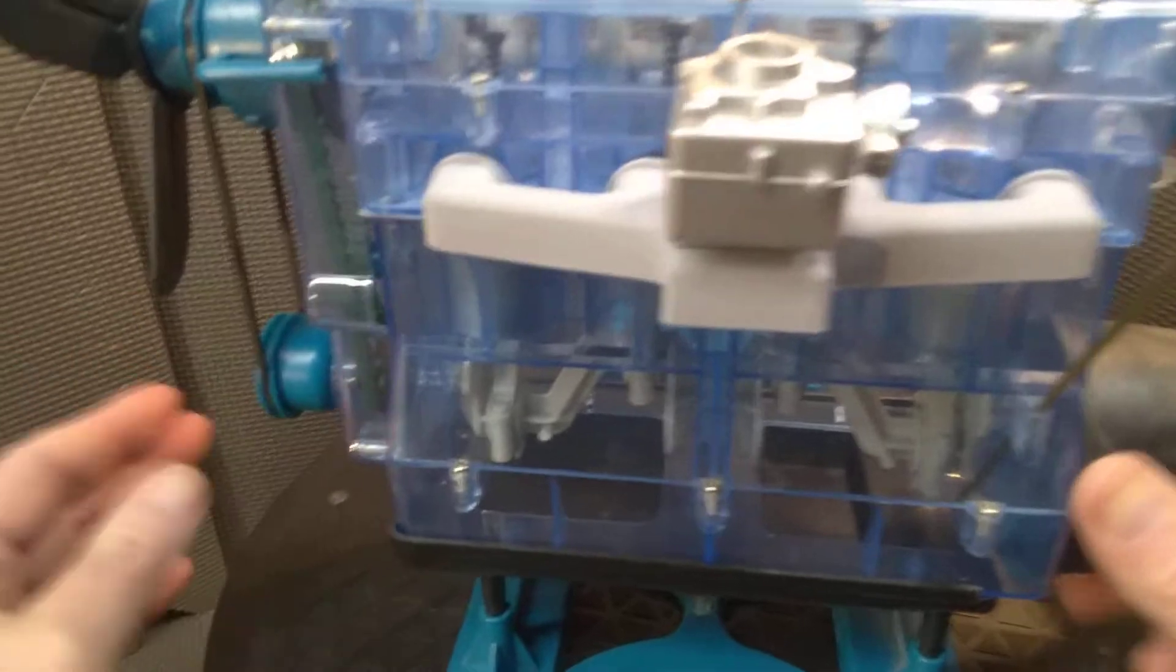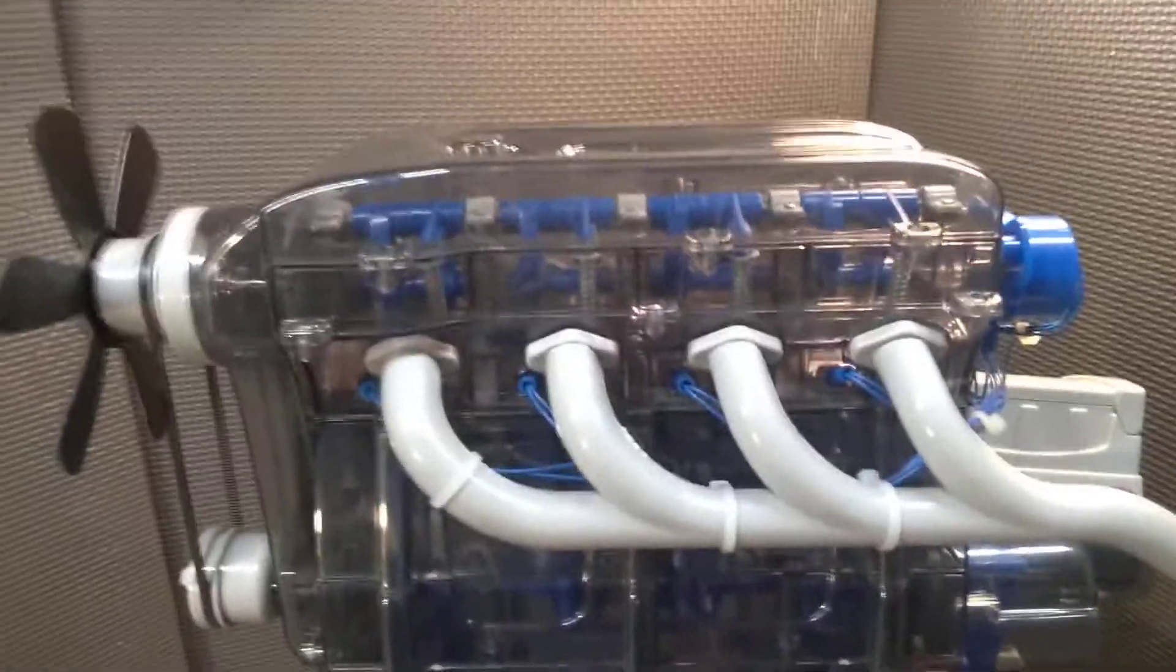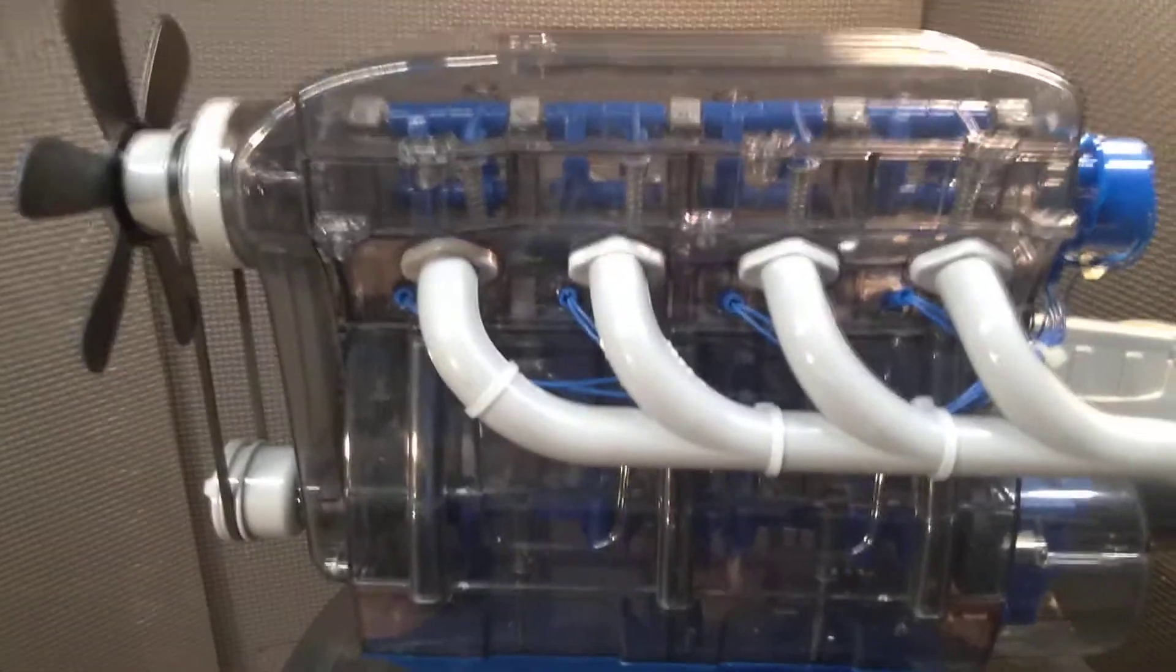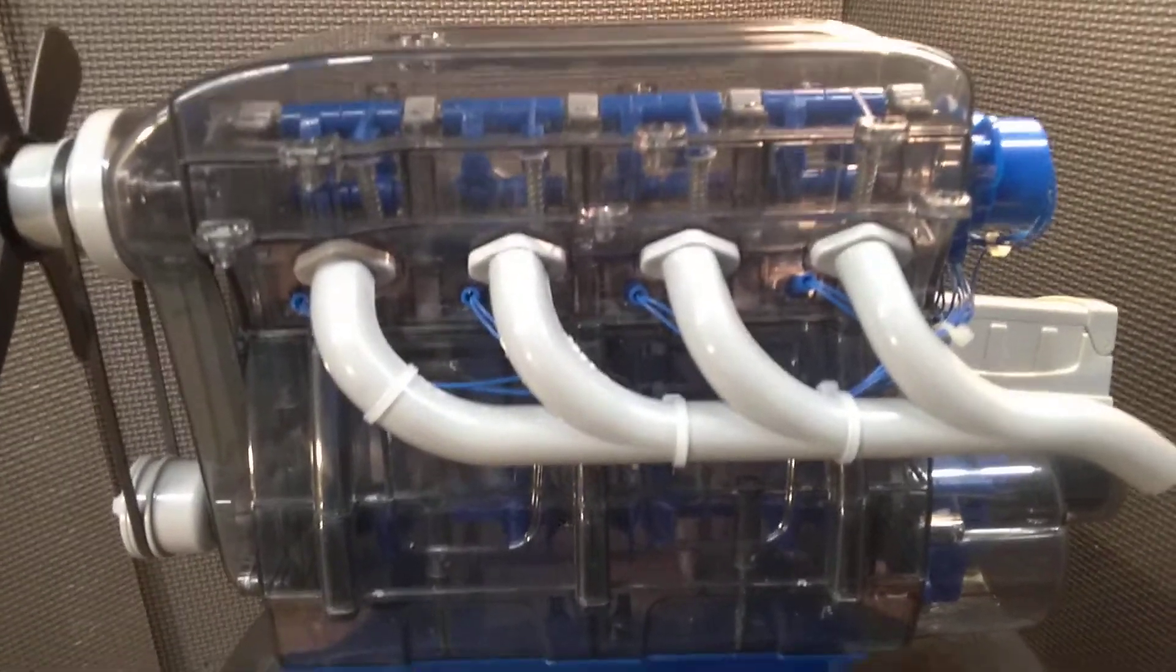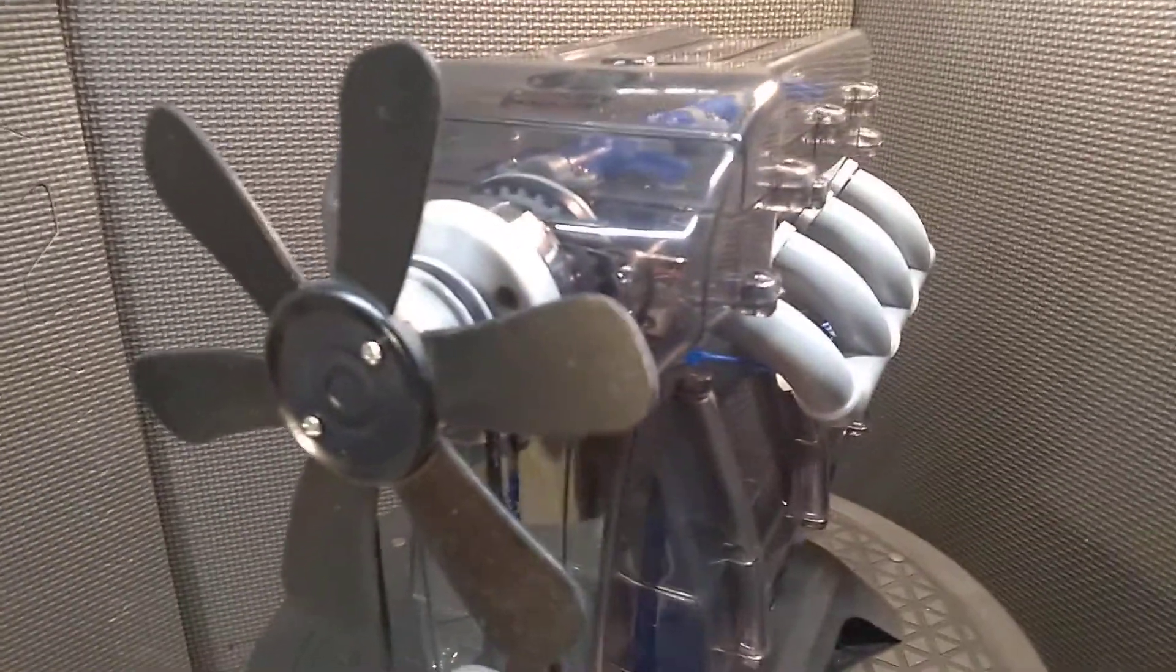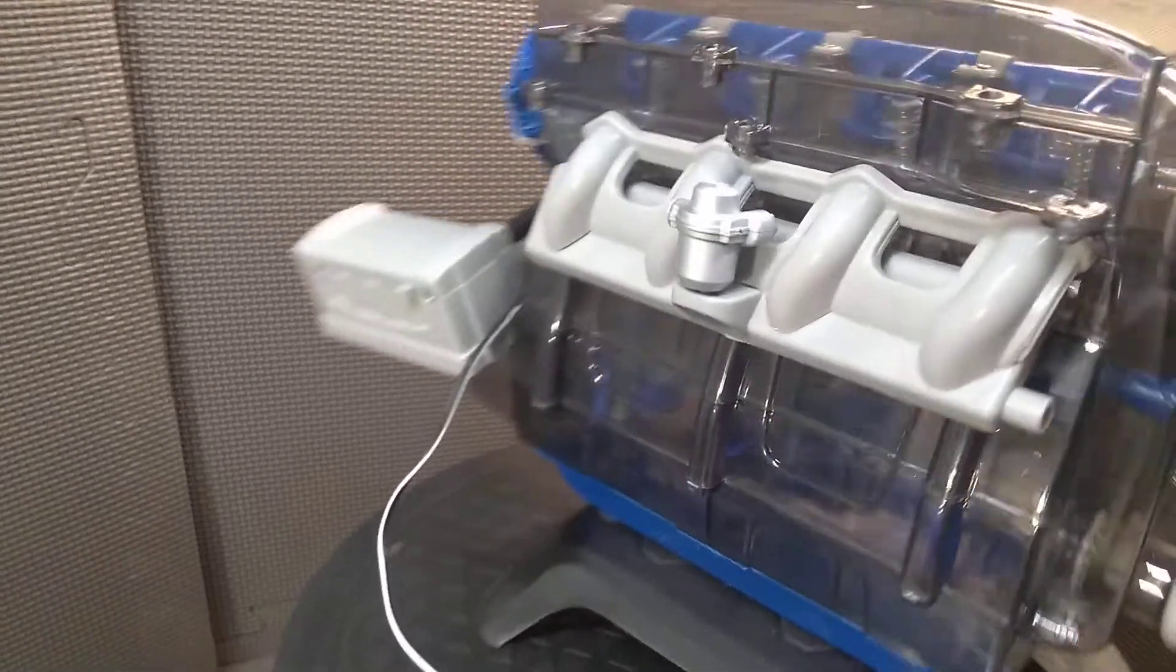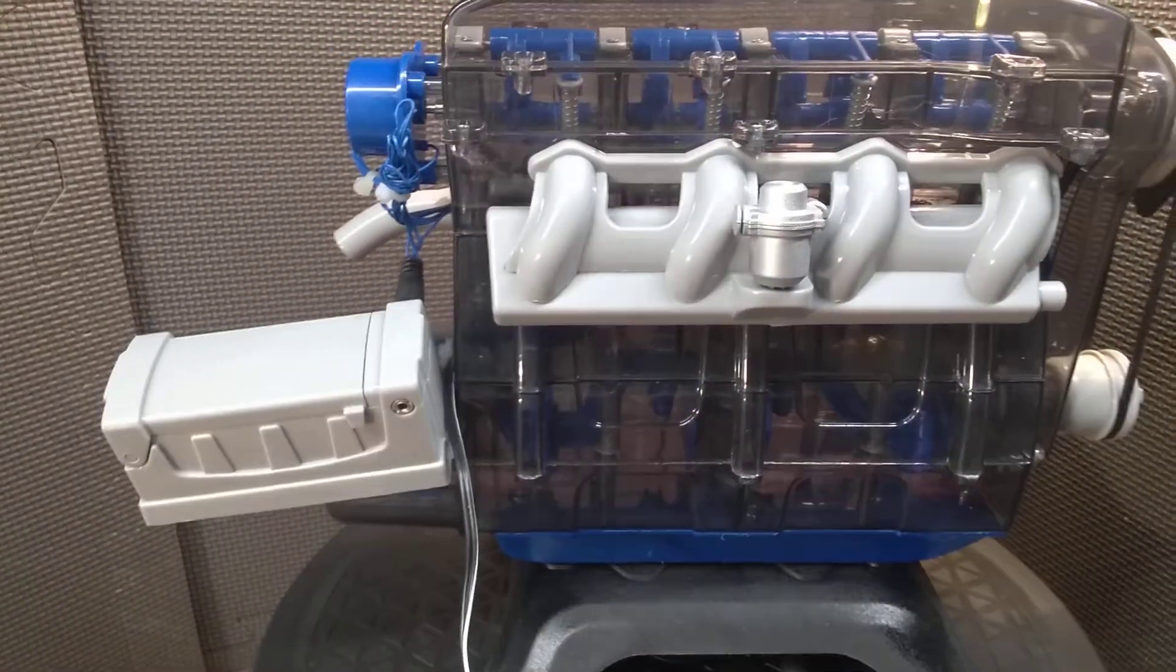So the other one that I put together here is this Discovery Channel engine. Here again, this has a kind of tinted plastic block, and it does obscure your vision a little bit in terms of being able to see it operate. It's a pretty cool-looking engine, and it operates pretty much the same concept as the other one.